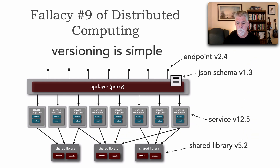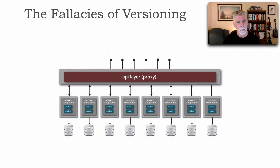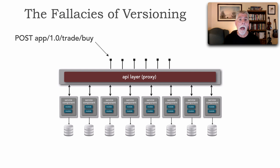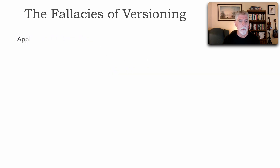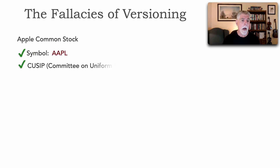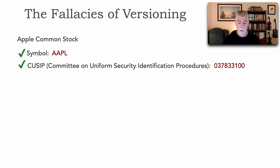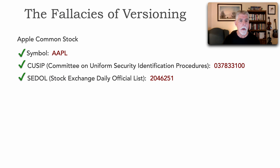Let me show you an example of some of the complexities and ways of dealing with versioning at a higher level than a service. Let's say we've got a trading application and I do a POST to buy certain stock — a POST for app version 1.0 of that endpoint. I'm doing a trade, a buy. It turns out that Apple common stock has three different ways of representing it: by symbol (AAPL), by CUSIP (037833100), usually used in the United States, or by SEDOL (2046251), which is often used in Europe — the Stock Exchange Daily Official List. All three of these represent the same instrument: Apple common stock.